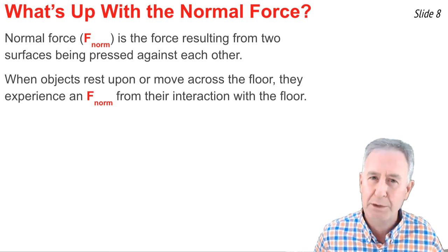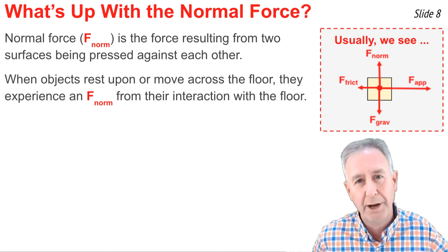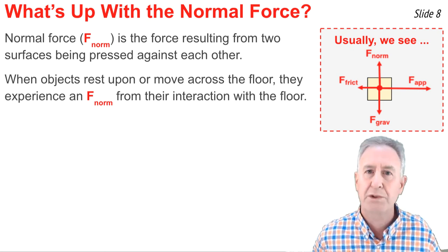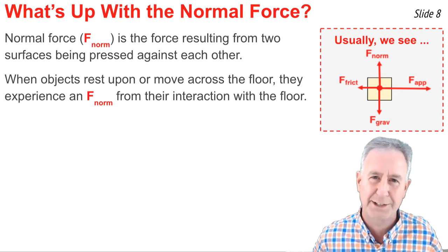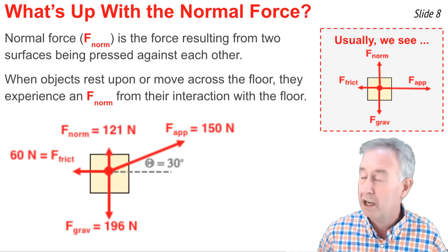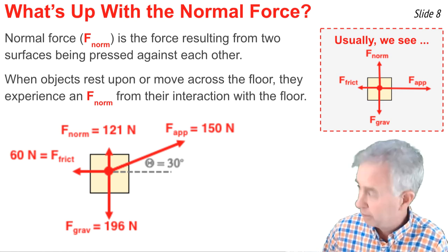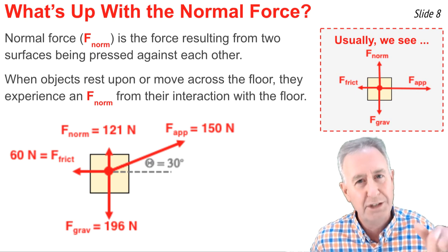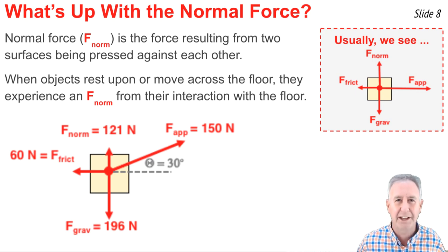Now normally when it comes to normal force, we expect this: the normal force is up, the gravity force is down, and they're of equal strength. And you might be used to this from a portion of a year of physics. But in the problem we just discussed, they weren't the same size. There was a normal force up, but take a look—it's not the same strength as the gravity force down. What's up with that? Well, I'm going to tell you.